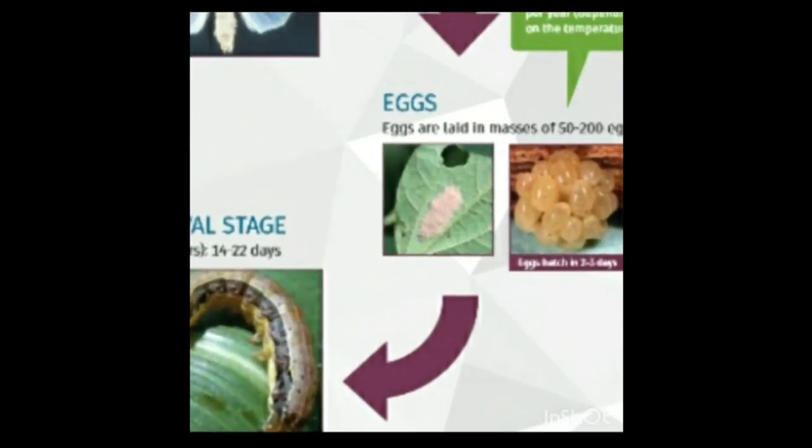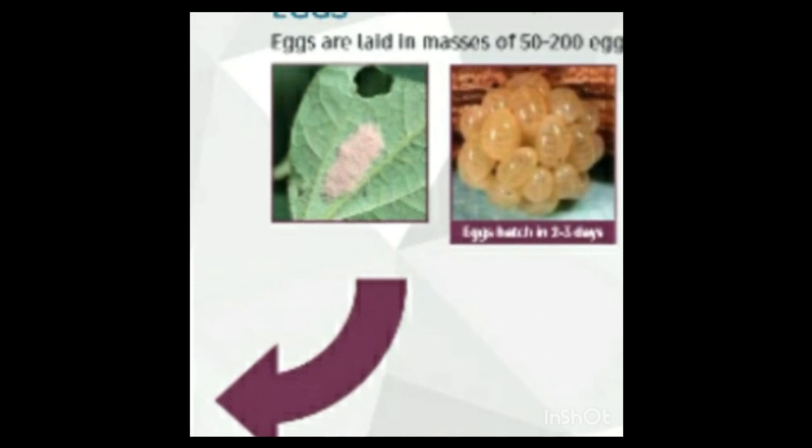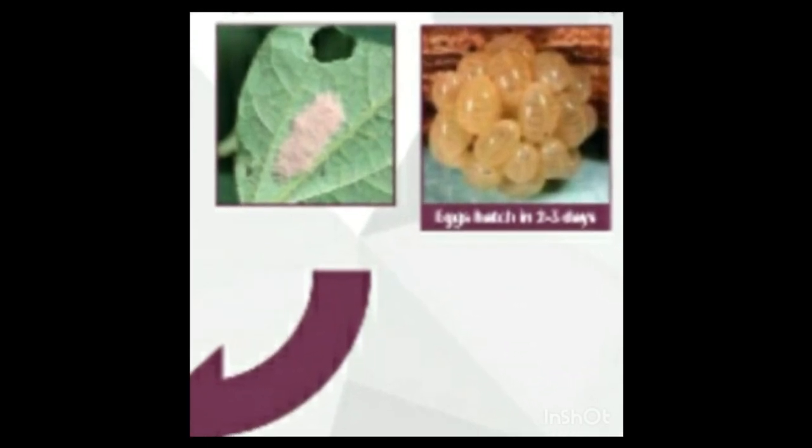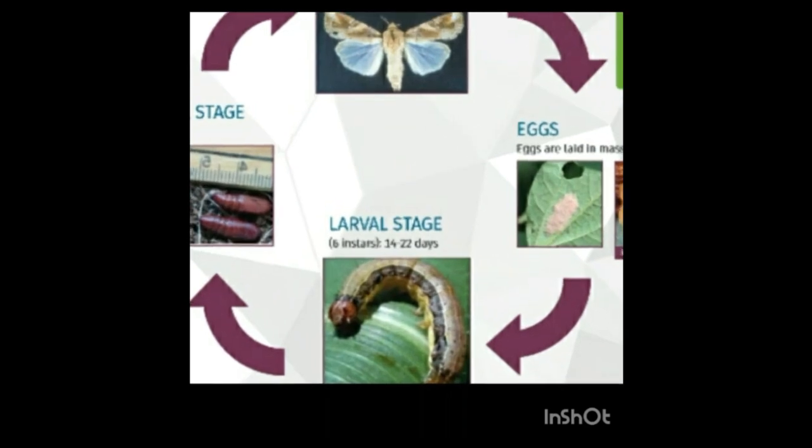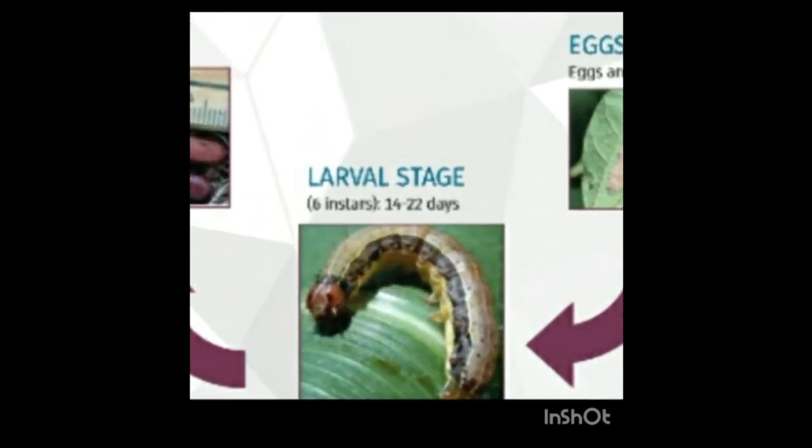The egg is dome-shaped; the base is flattened and the egg curves upward to a rounded point at the apex. Eggs are laid in masses of approximately 150 to 200 eggs, in 2 to 4 layers deep on the surface of the leaf. Egg maturity takes place in 2 to 3 days at a temperature of 20 to 30 degrees Celsius.